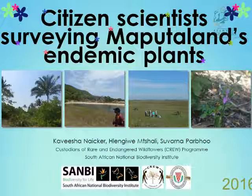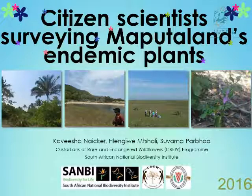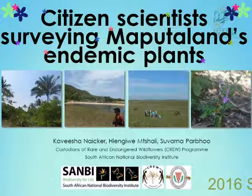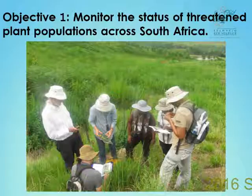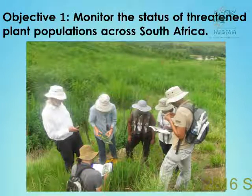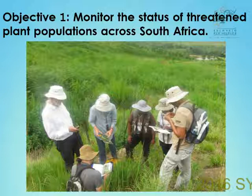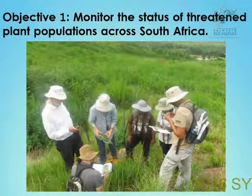We have five objectives, and the first one is to monitor the status of threatened plant populations across South Africa. We have seven groups in nine of our provinces, and we monitor threatened plants there.